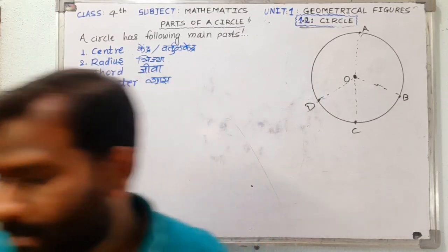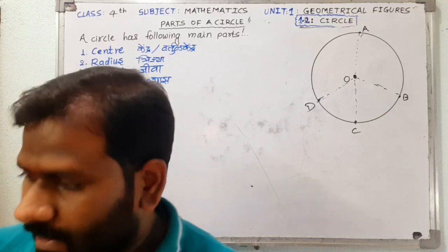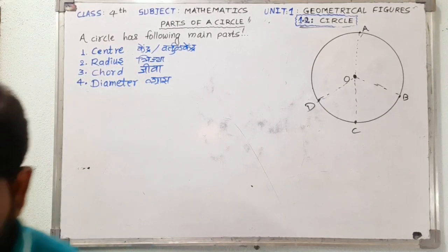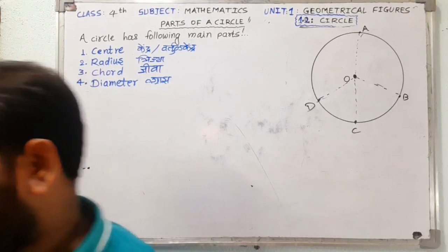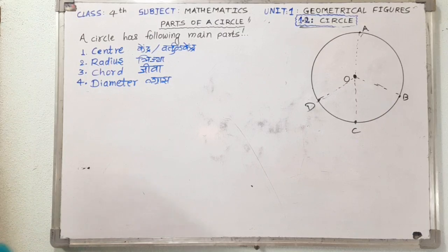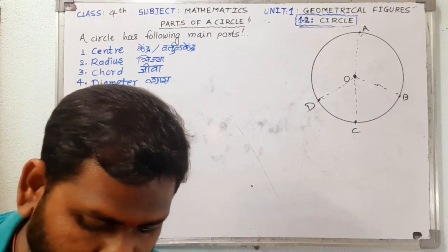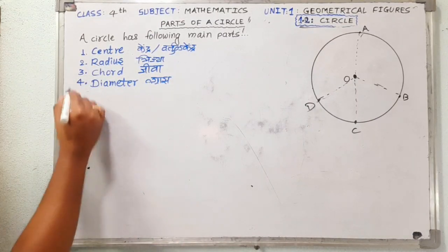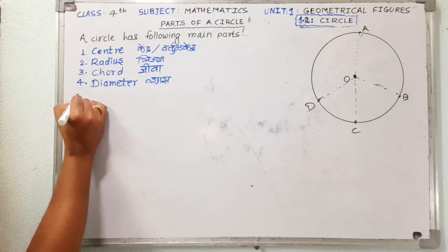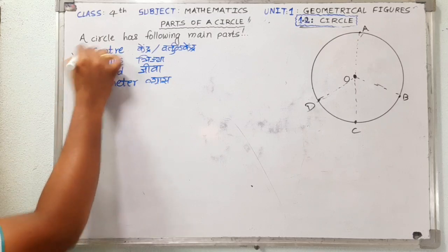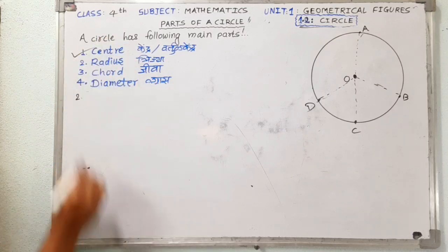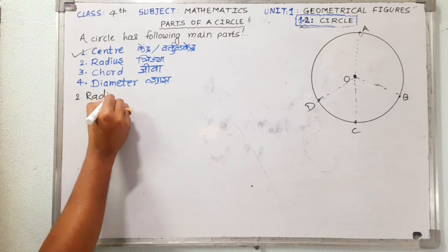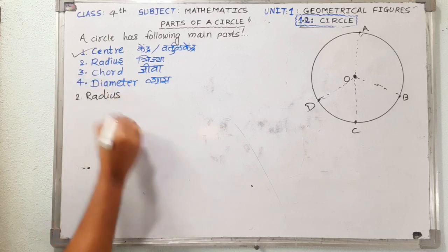The next heading is the radius of a circle. We have completed the center. Now we move to the radius of the circle.